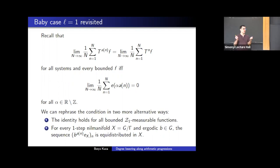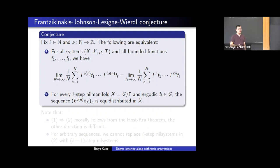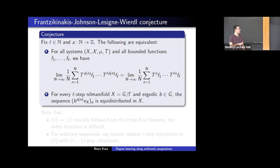For longer averages — the case L greater than one — there is a fairly old conjecture made by Frantzikinakis, Johnson, Lesigne, and Wierdl, which essentially generalizes what I said on the previous slide. This conjecture says that for all systems and all bounded functions, this identity holds if and only if for every ergodic nilrotation on an L-step nilmanifold, the following sequence is equidistributed in the nilmanifold. This conjecture reduces showing the identity to showing an equidistribution property on L-step nilmanifolds.